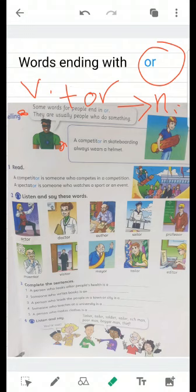Now, exercise number three. We have to match between the definition and the person in the pictures. Number one, a person who looks after people's health. The person who cares for people's health is, of course, a doctor. So write doctor here. Number two, someone who writes books. Of course, is an author.